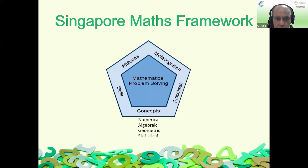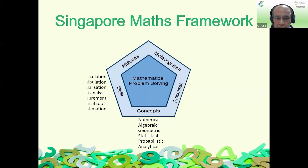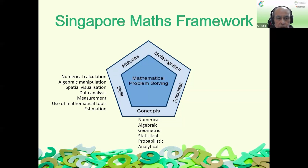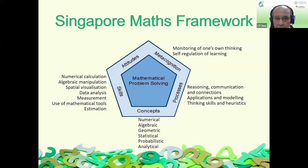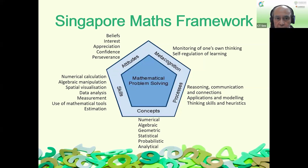The five domains are: concepts - numbers, algebra, geometry and so on; skills - the ability to perform numerical calculations and manipulate algebra; processes - students need to be able to think in mathematical terms; and metacognition - students need to be aware of their own learning process so they can improve themselves.